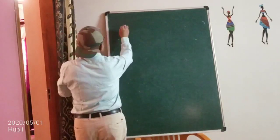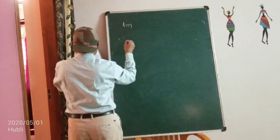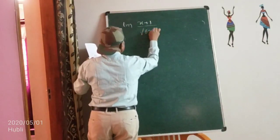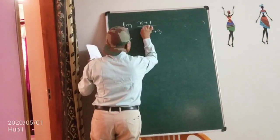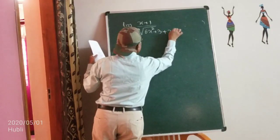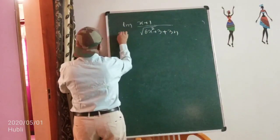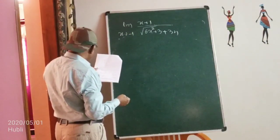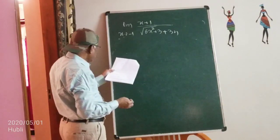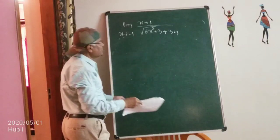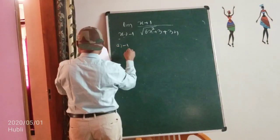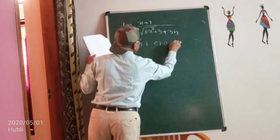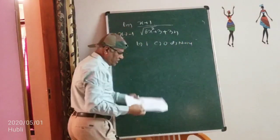Next example: limit of (x + 1)/(√(6x² + 3) + 3x) as x→−1. The options are: (1) −1, (2) +1, (3) 0, (4) none of these.